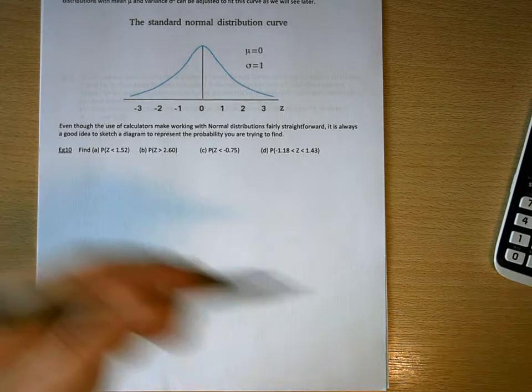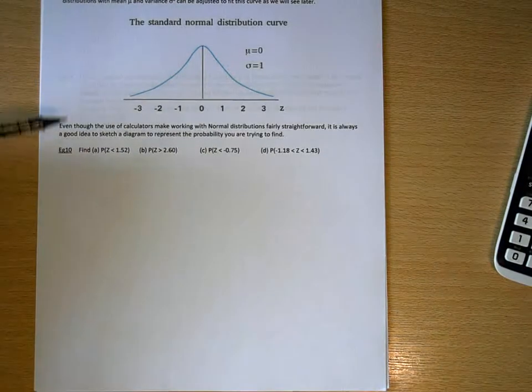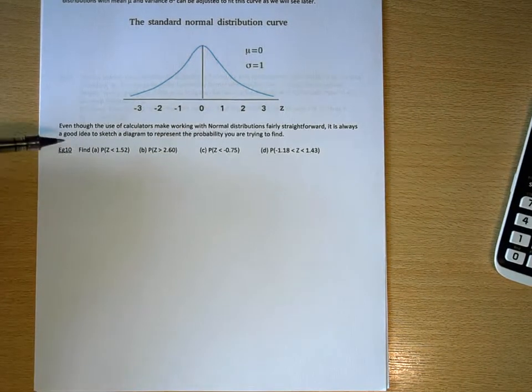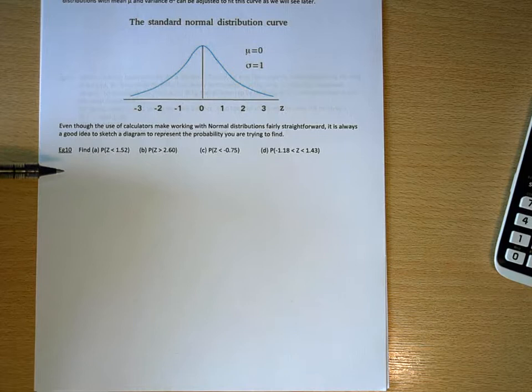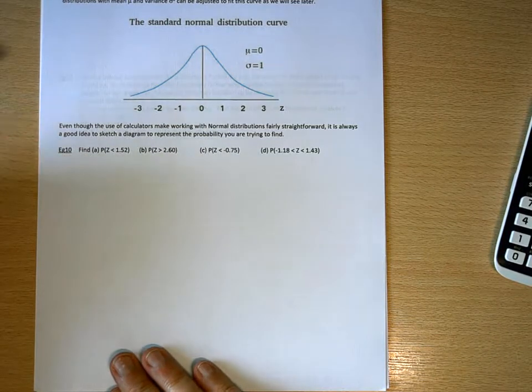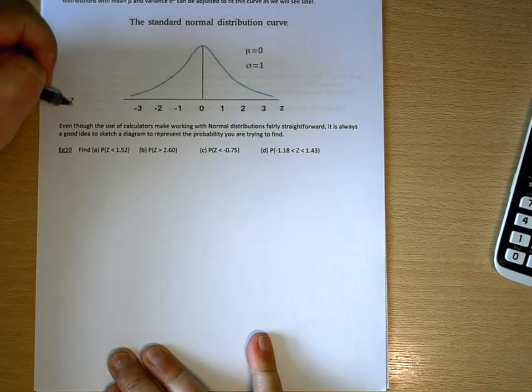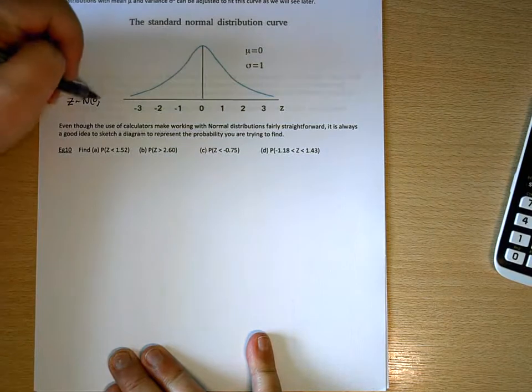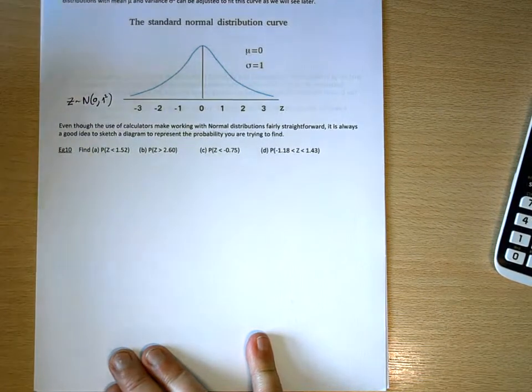OK, in this example, we're looking to use our calculator to read off probabilities from the standard normal distribution. That's the normal distribution which is represented by Z with a mean of 0 and a standard deviation of 1.